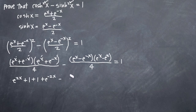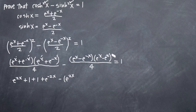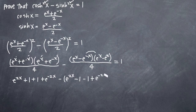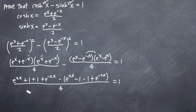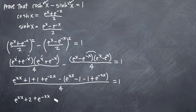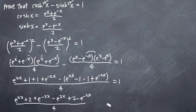Then we'll combine both fractions. So we get minus e to the 2x — since e to the x times e to the x gives e to the 2x — then e to the x times e to the negative x gives 1, so we get minus 1. Same thing multiplying the other pair gives another minus 1. And e to the negative x times e to the negative x gives plus e to the negative 2x. All divided by 4, equal to 1. So our numerator becomes e to the 2x plus 2 plus e to the negative 2x, minus, when we distribute the negative sign, e to the 2x plus 2 minus e to the negative 2x, all divided by 4, equal to 1.